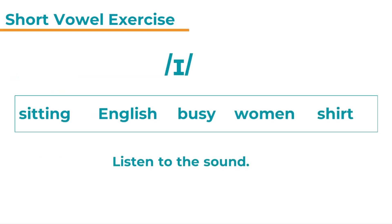Here is our first sound. Listen to the sound. Now read the five words out loud and listen to yourself. Which word is the odd one out? It does not contain ɪ. Listen and check. Sitting English busy women shirt.